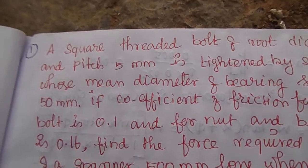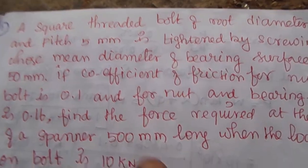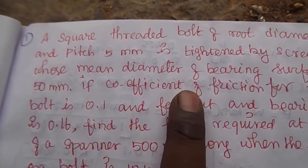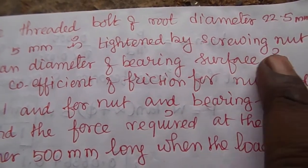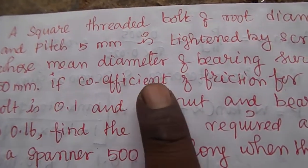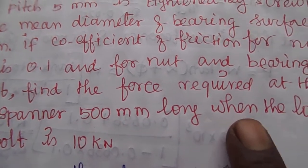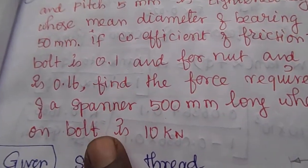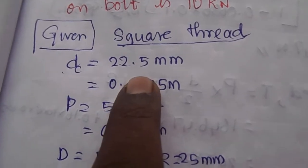Good morning. I am going to talk about the 5th minute friction, specifically the square threaded bolt. The square threaded bolt has a root diameter of 22.5 mm and pitch of 5 mm, and is tightened by a screwing nut whose mean diameter of the bearing surface is 50 mm. The coefficient of friction for nut and bolt is 0.1, and for nut and bearing surface is 0.16. Find the force required at the end of the spanner which is 500 mm long, when the load on the bolt is 10 kN.